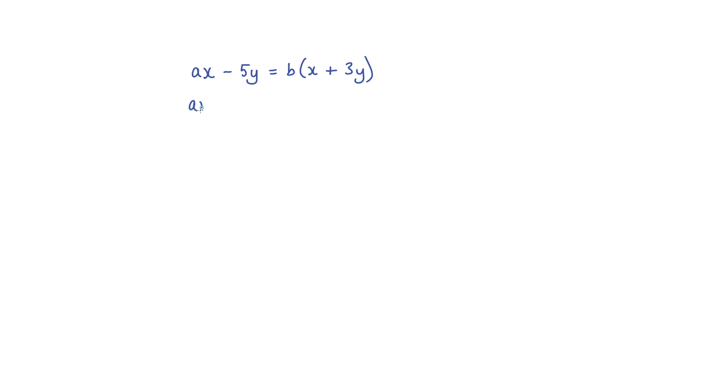So I'll have ax minus 5y on the left equals... We've got this b term multiplied by the x, which gives us bx. And we've got the b multiplied by the 3y, so we've got plus 3by.